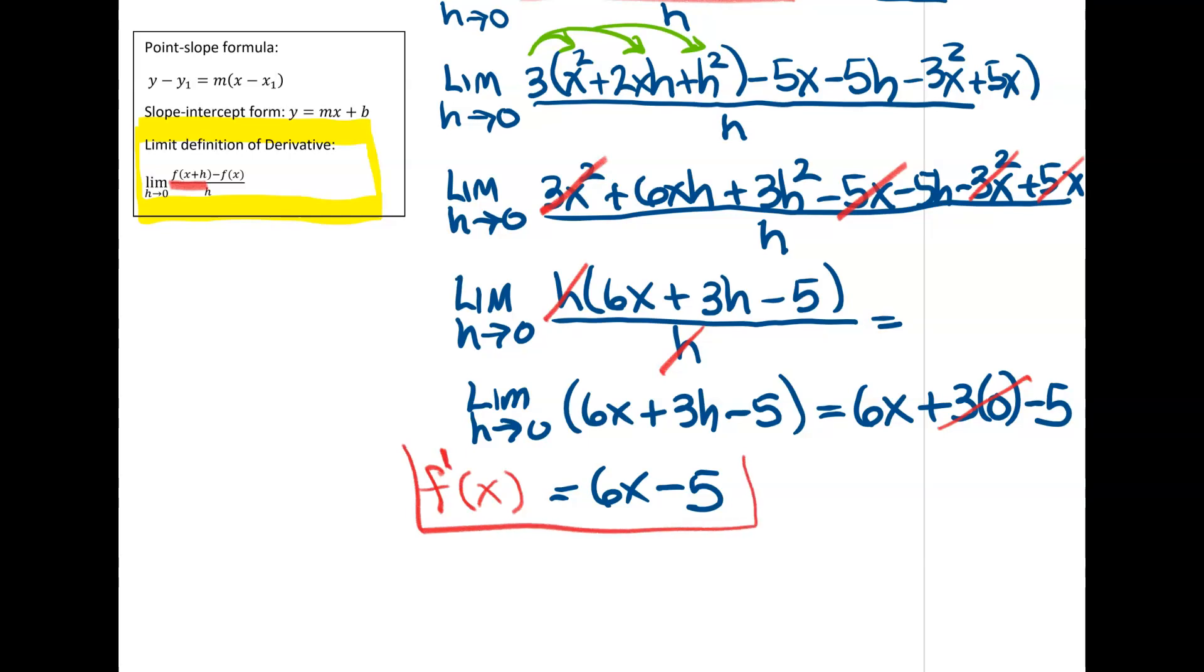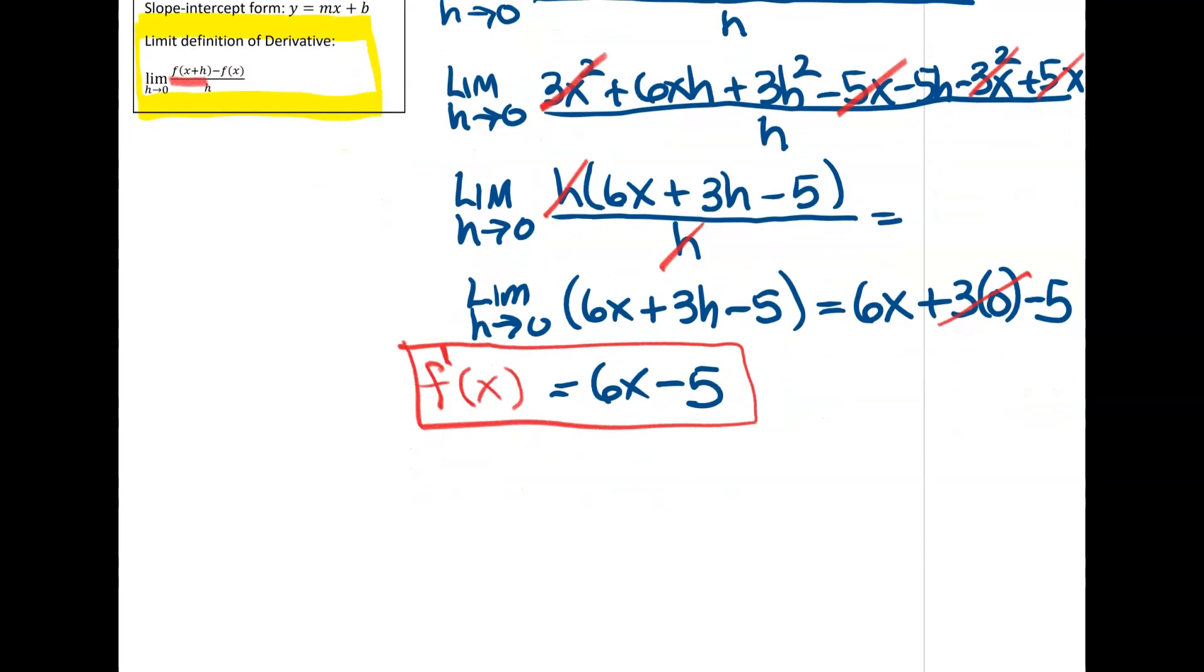This is my derivative of my function. So this was the first part of what they asked me to find. So this derivative formula here is going to be the formula that I can use to get the slope at any point that I like.